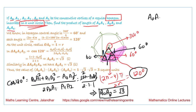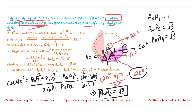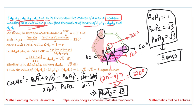So A₀A₁ = 1 unit and A₀A₂ = √3 units. Similarly, by considering triangle A₀A₅A₄ we can calculate A₀A₄ = √3 units. Therefore the product of these three lengths A₀A₁·A₀A₂·A₀A₄ = 1 × √3 × √3 = 3 units.